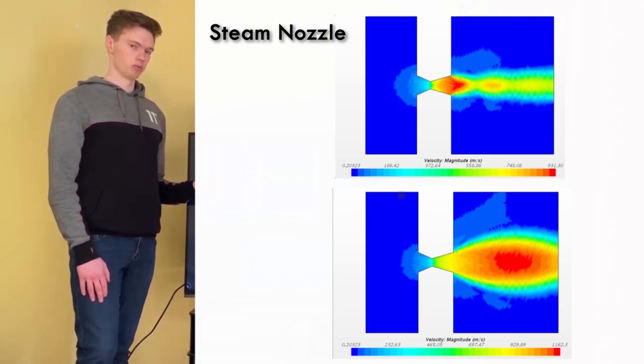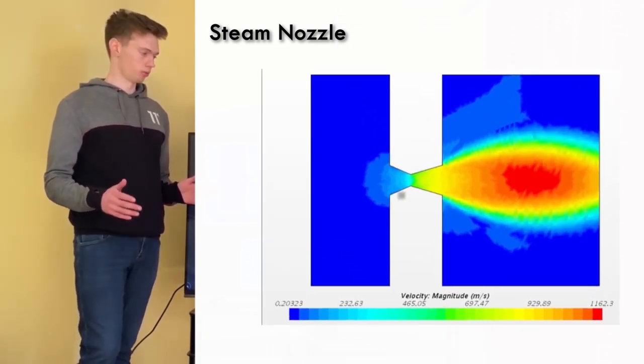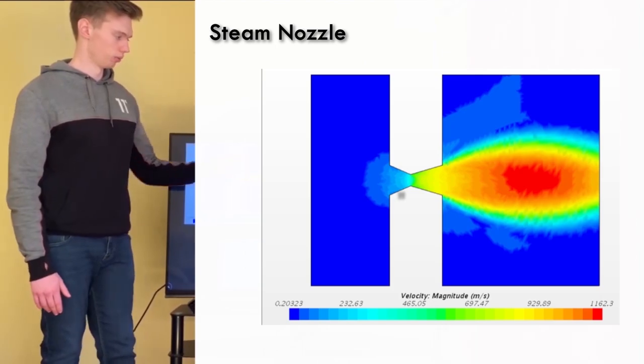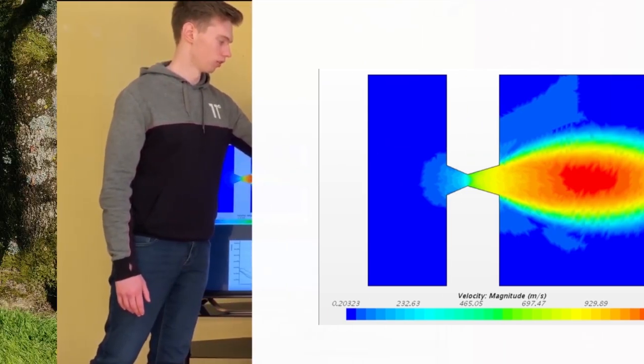So to get from here to here, we started the simulation with a 2 bar differential. We slowly increased it until we got our 4 bar differential, and then we got the expansion that we were looking for. And we also got the velocities.